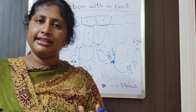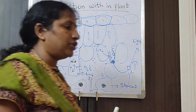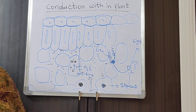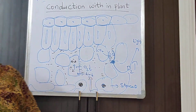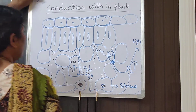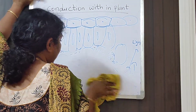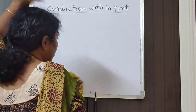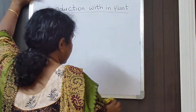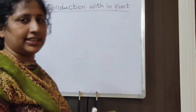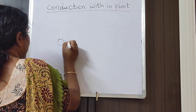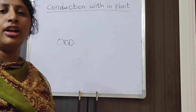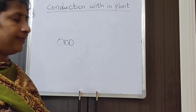This same principle is observed in lenticels and root hairs also. By diffusion, gas exchange takes place. Only the leaf example is explained in the textbook, but the same principle applies to lenticels and root hairs. Root hairs absorb oxygen from air present between soil particles and supply it to the roots and plant.